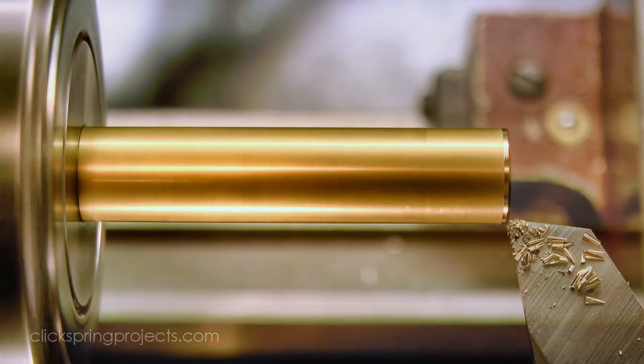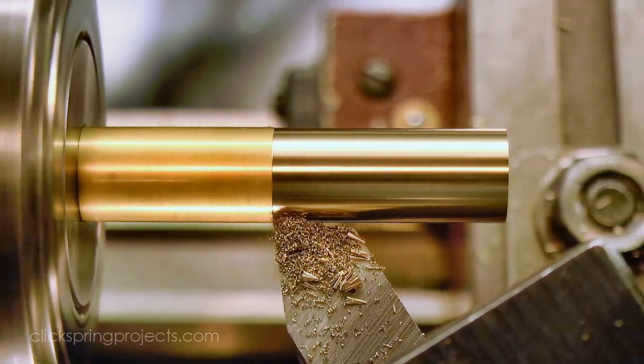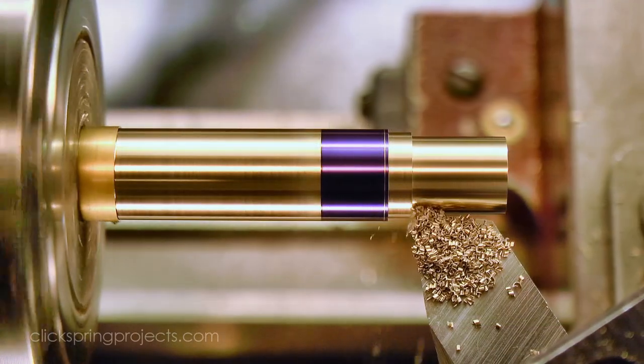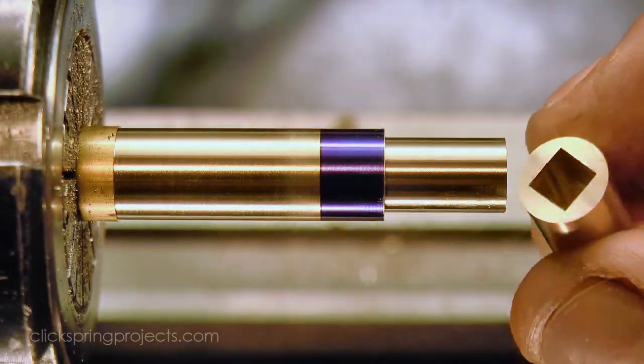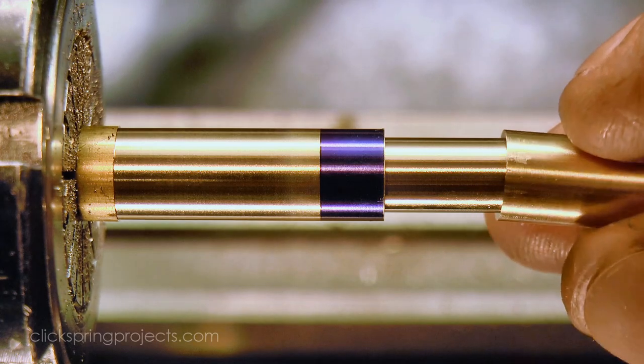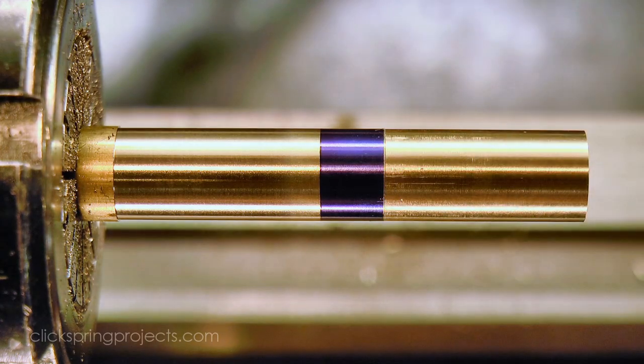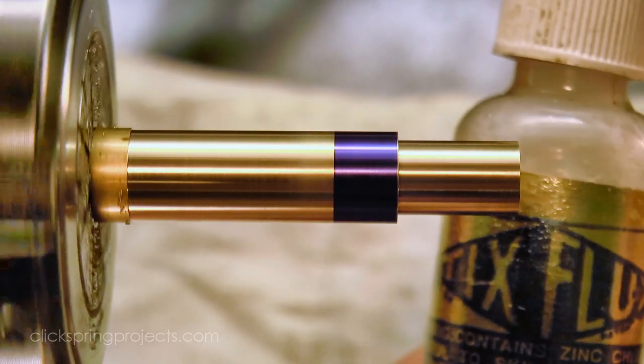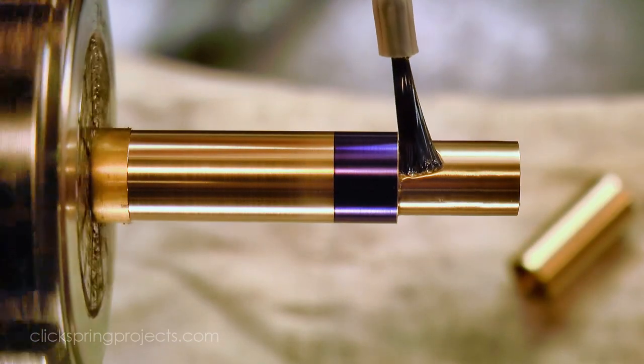Okay, so with the end piece underway, I moved on to the rest of the shaft, first by forming the spigot section. With the fit confirmed, I used some flux to prepare the join and then soft soldered the end piece in place.